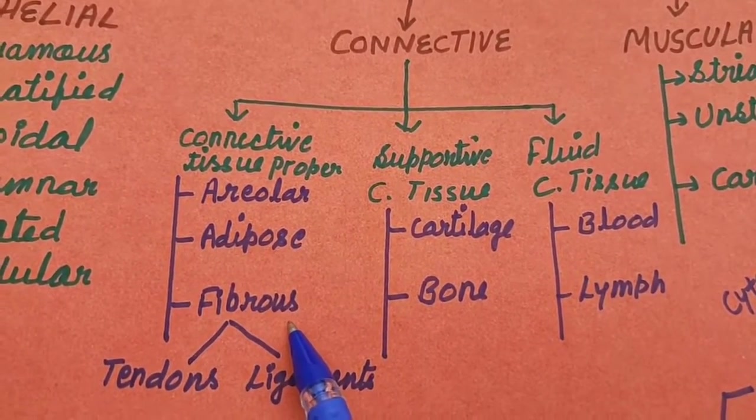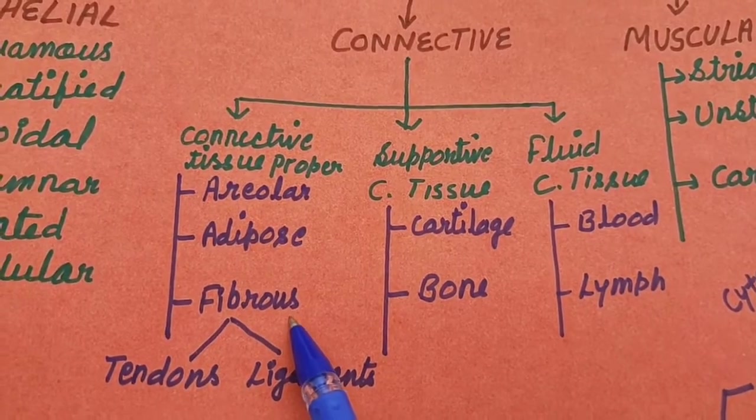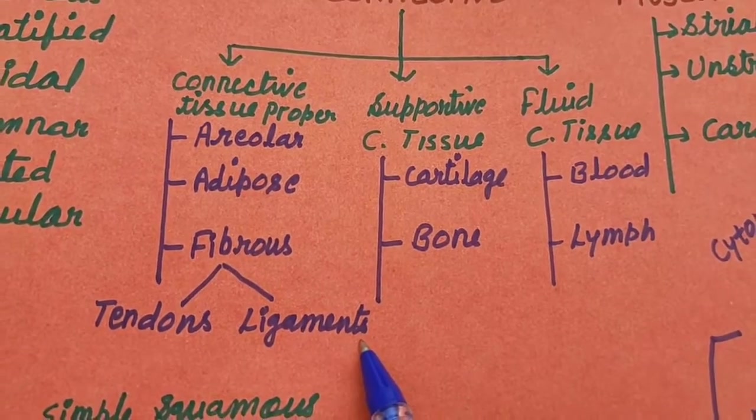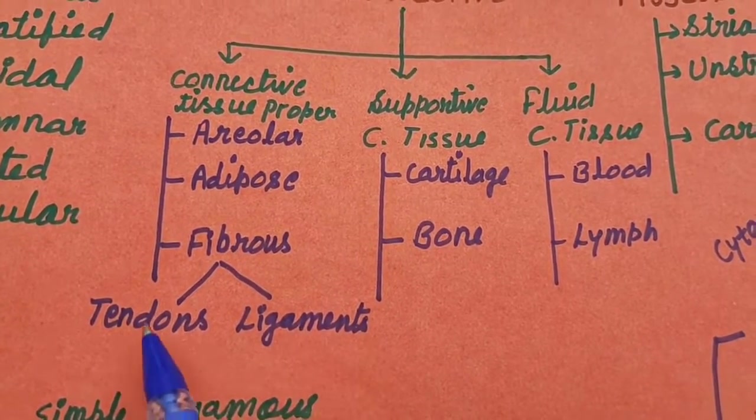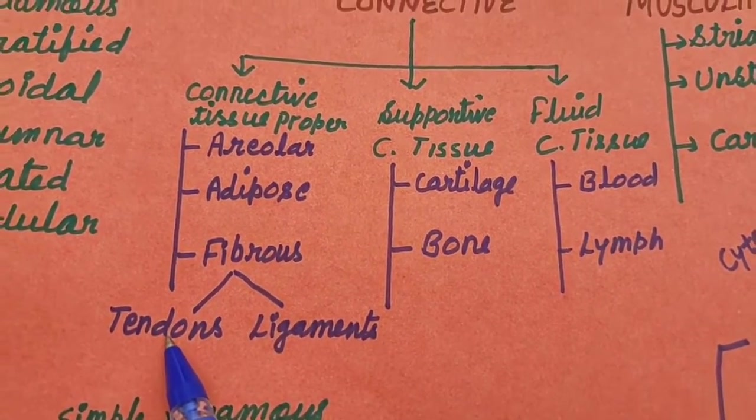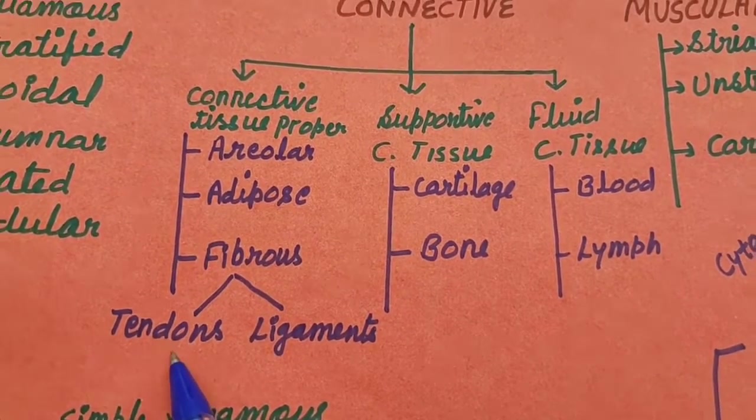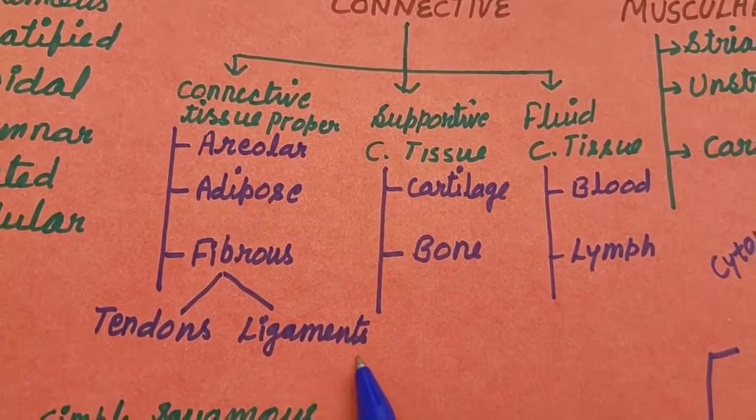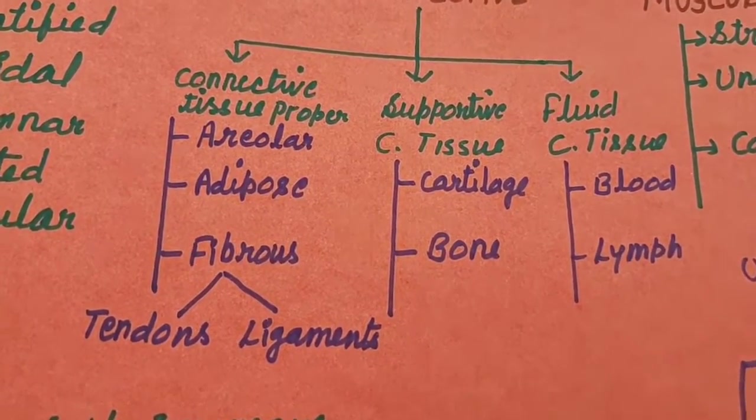Fibrous connective tissue - two types: tendons and ligaments. What is the difference between tendons and ligaments? Tendons connect muscles to bone, while ligaments connect one bone to another bone.